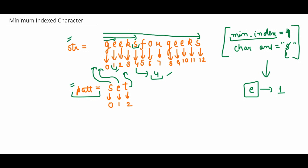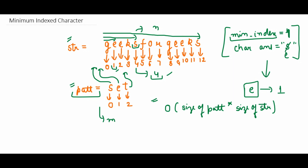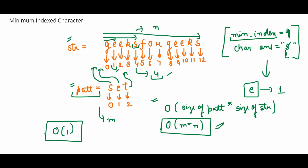In this approach, we are iterating str string again and again for each character of pad string. So the time complexity is: for each character of pad string (size m) we scan str string (size n), giving us O(m × n). This is not a good time complexity, so we'll look at a better approach. The space complexity is O(1) because we are not using any extra space.